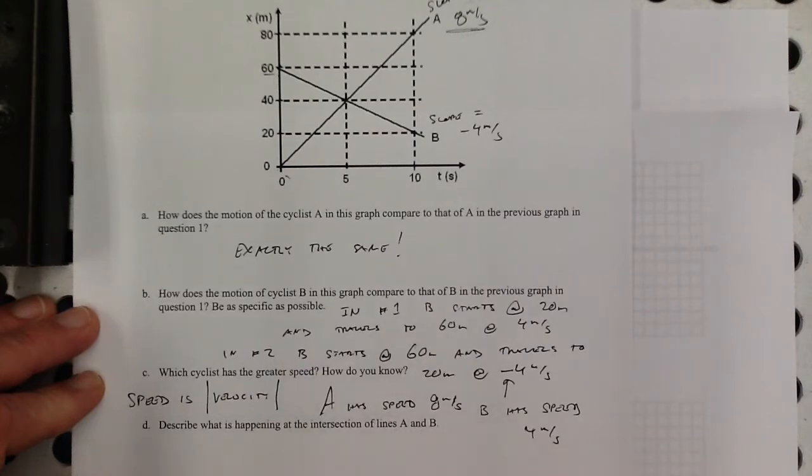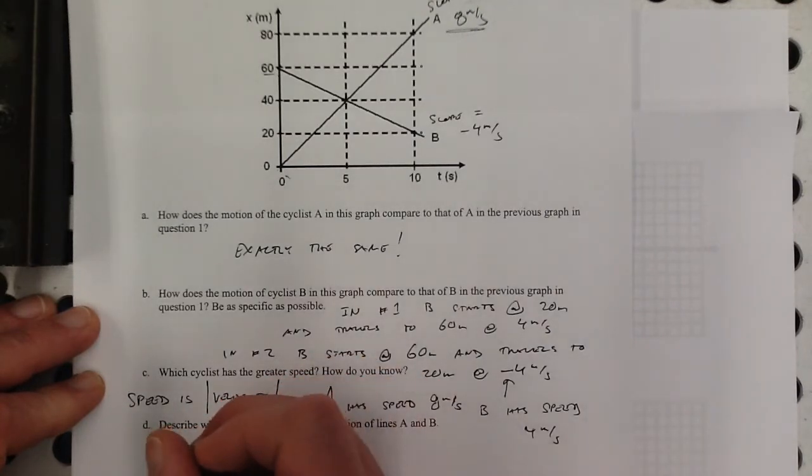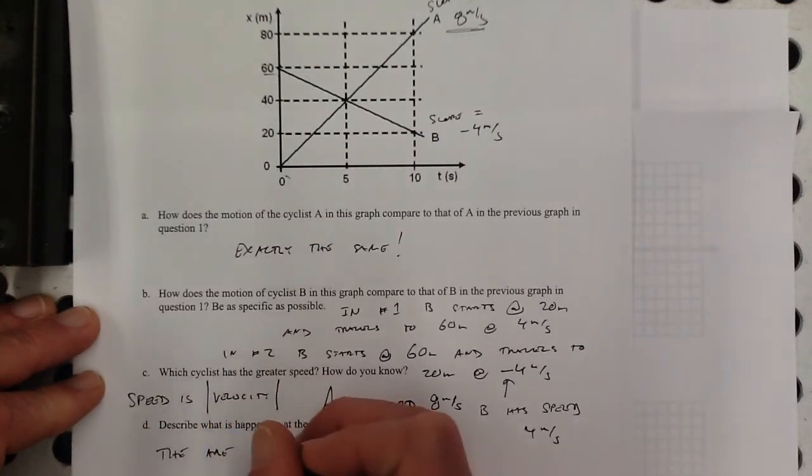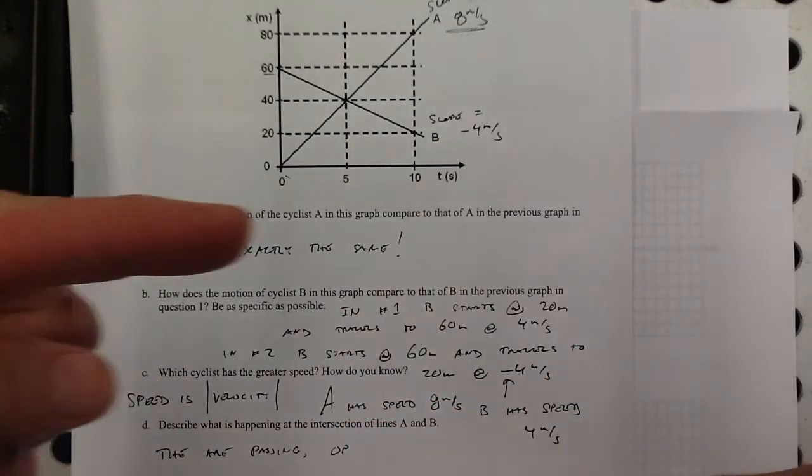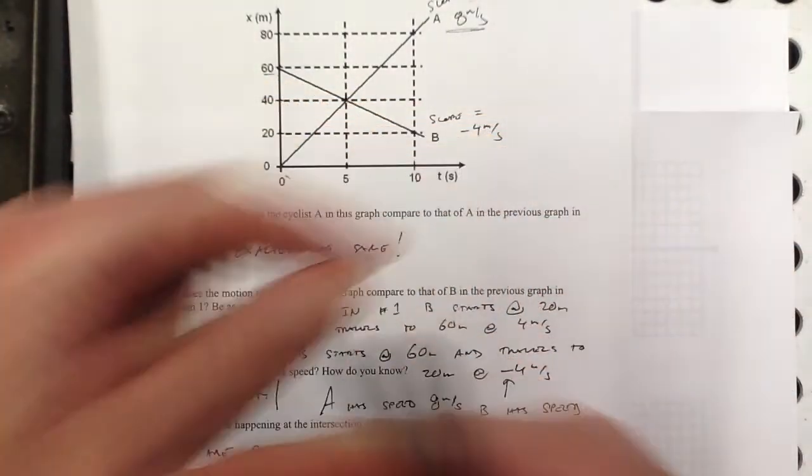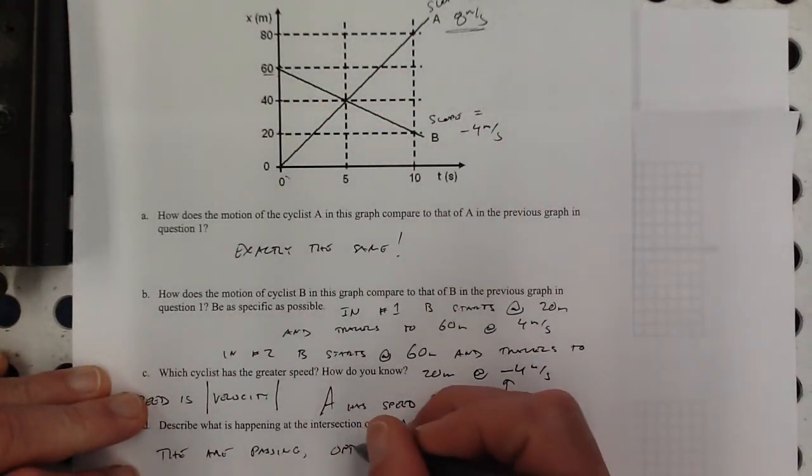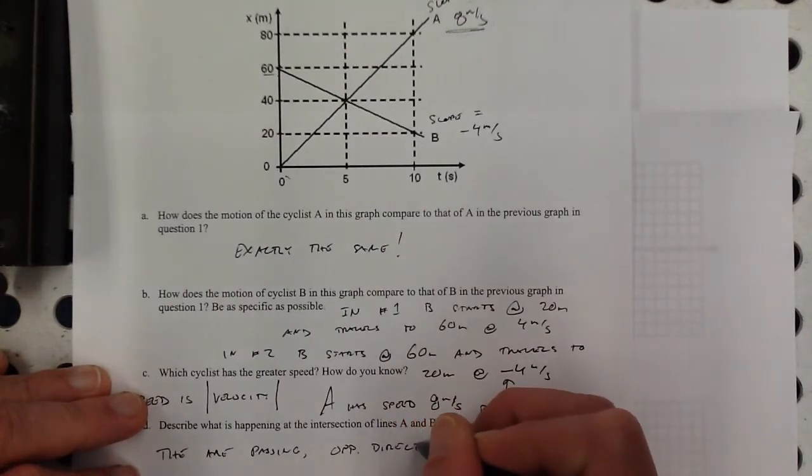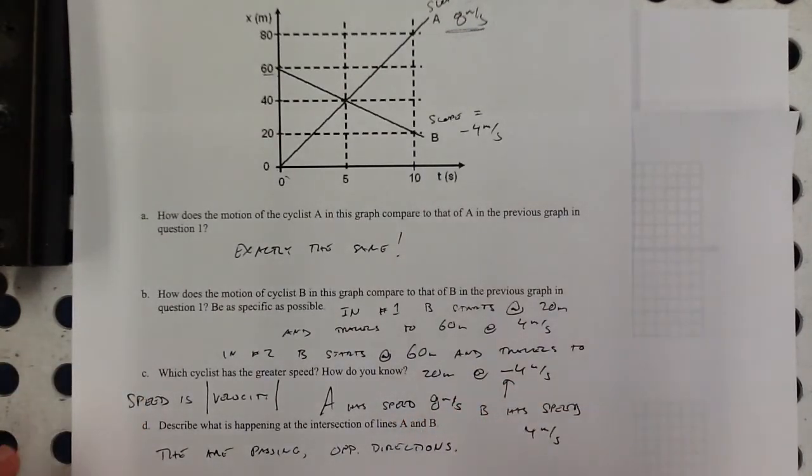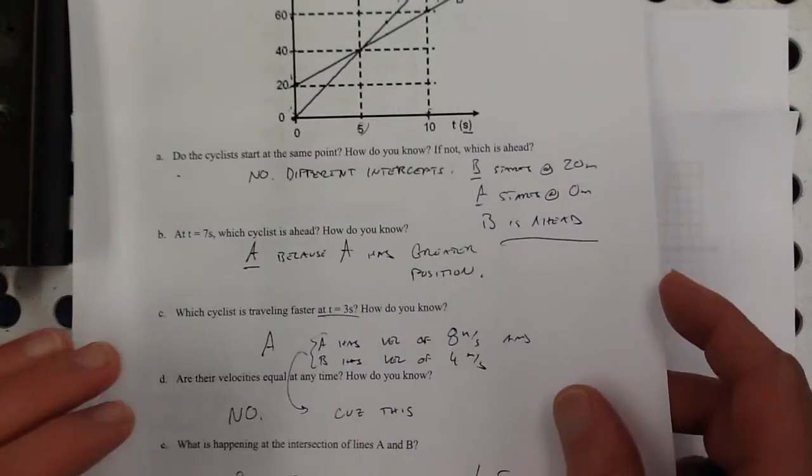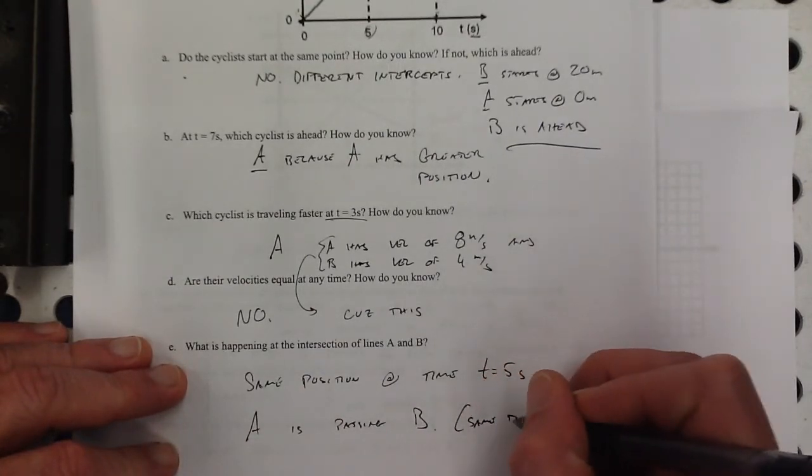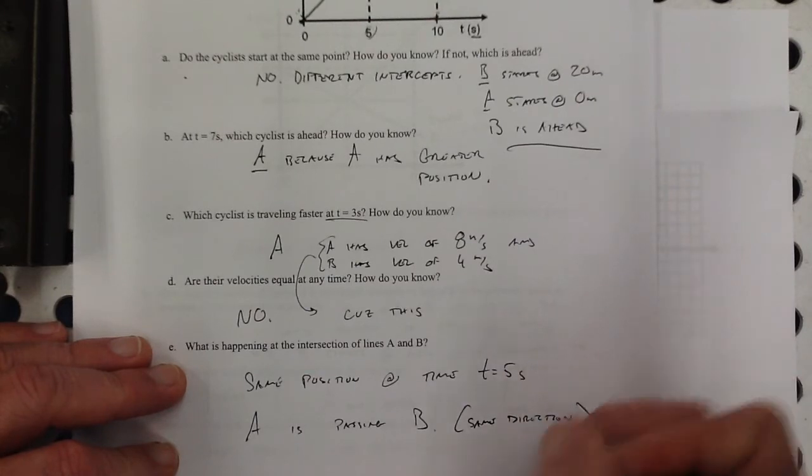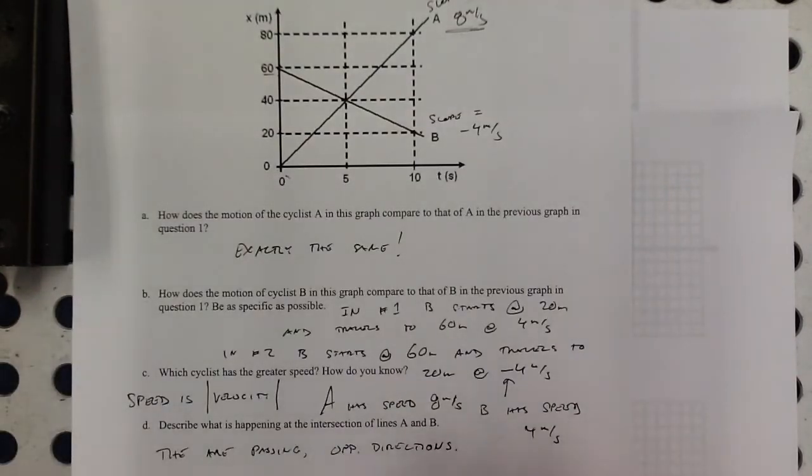Describe what's happening at the intersections of A and B. They are passing in opposite directions. They're passing each other opposite direction. And that makes me want to say maybe here, what's happening at that intersection, A is passing B in the same direction. A is just passing because A is going faster. Here, they're passing because they're going in opposite directions. It doesn't matter if A is faster or not.